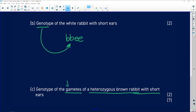Now, in the gametes, we have to segregate the alleles. So a heterozygous brown rabbit is going to have one allele brown, one allele white. And short ears - it's only going to have the little e. Because it'll have two little e's, but we only have to show it once.